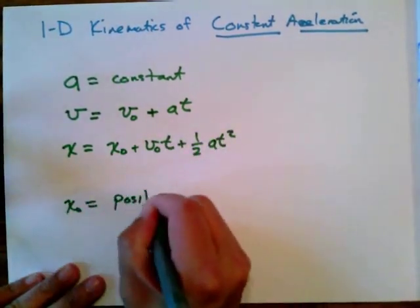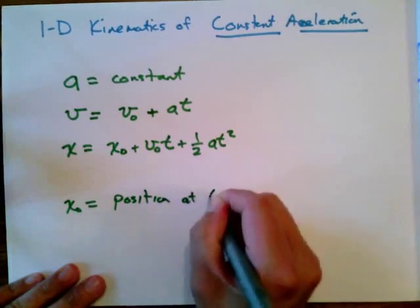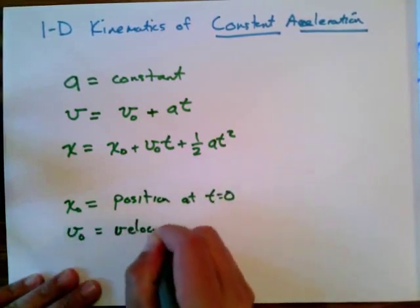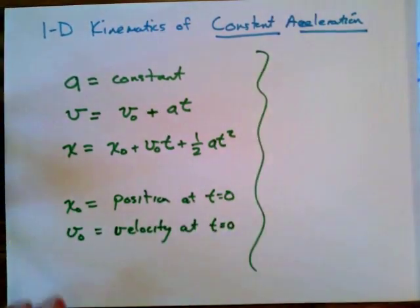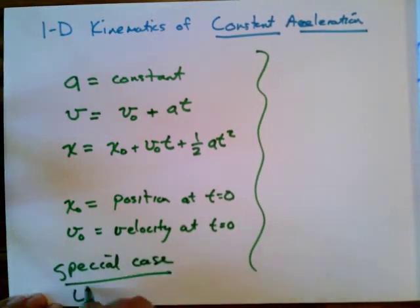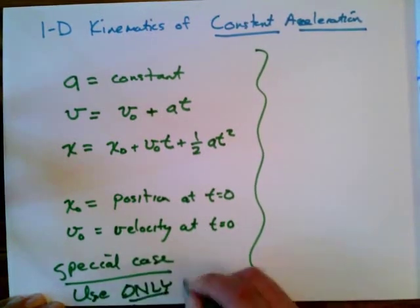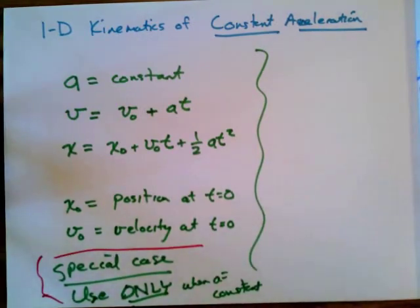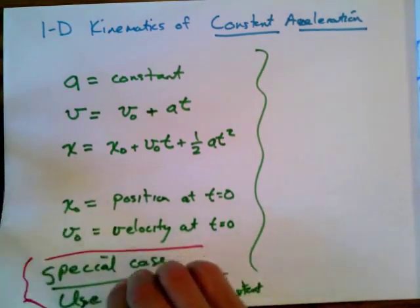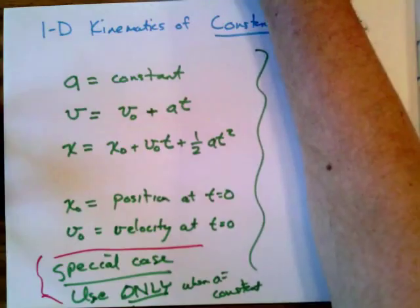Where x naught is the position at time t equals zero, and v naught is the velocity at time t equals zero. To remind you, this is a special case — you can only use these equations when the acceleration is constant. These equations cannot be used in general; they can only be used in the case of constant acceleration.